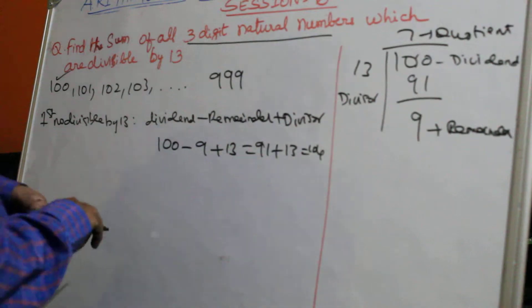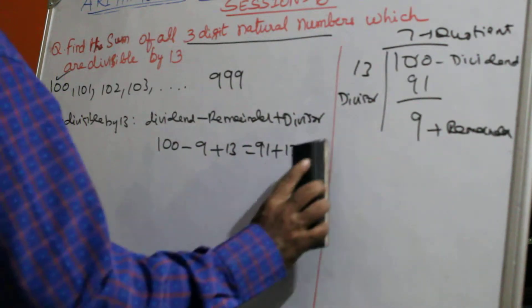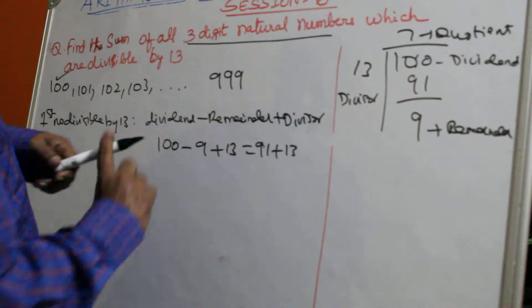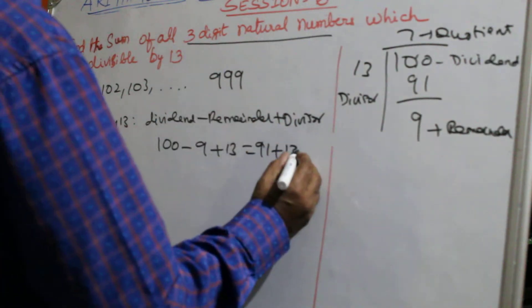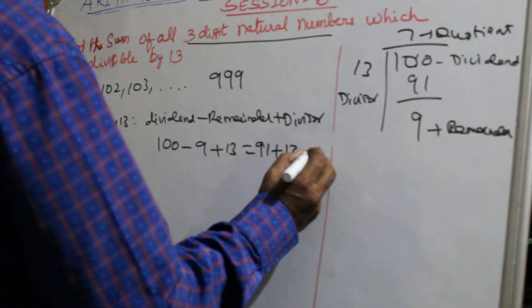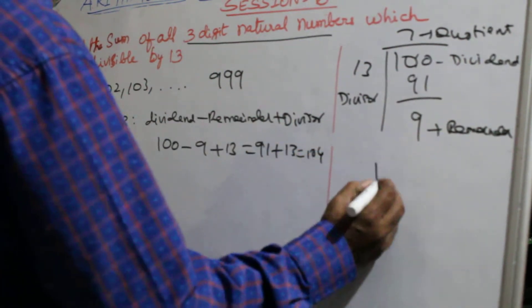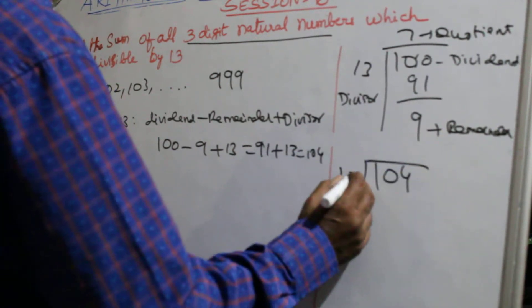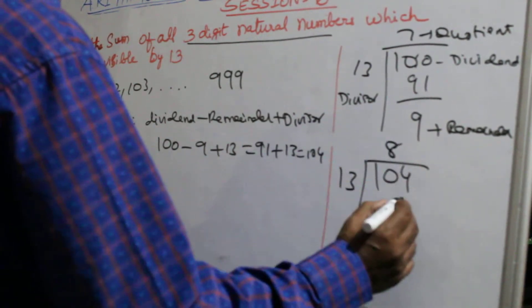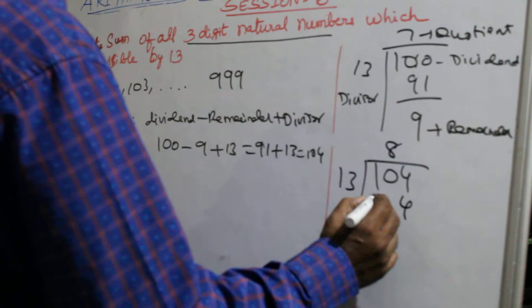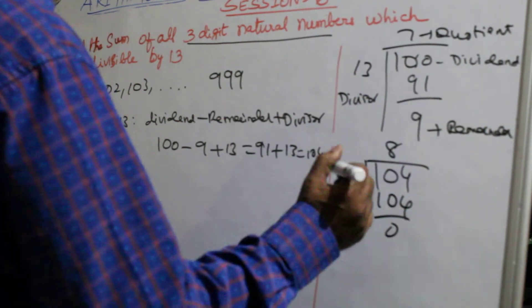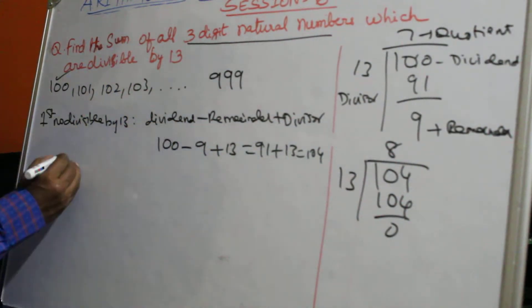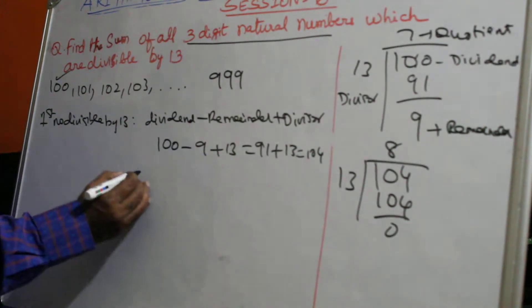You can check it. 120 divided by 30 — put 4, 4 threes are 12. It is exactly divisible. So the first three-digit number divisible by 30 is 120.